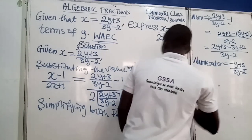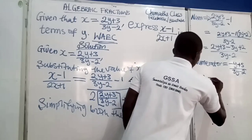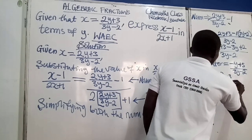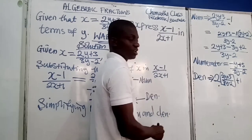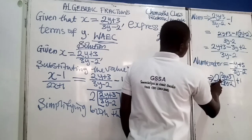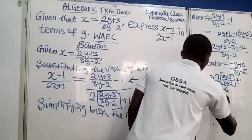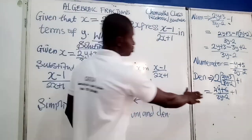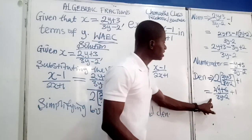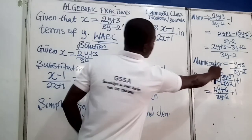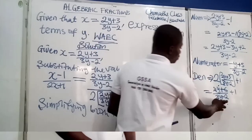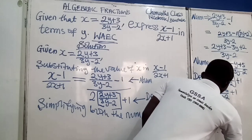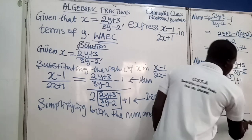Now, denominator. The denominator expression is 2 times the quantity 2y plus 3 over 3y minus 2, plus 1. Multiplying 2 through gives 4y plus 6 all divided by 3y minus 2, plus 1. This is also a fraction for the denominator, and we are going to simplify it just like the numerator. We will use 3y minus 2 as the LCM.